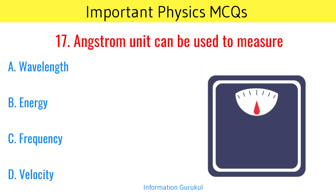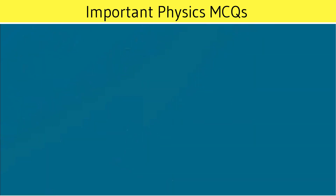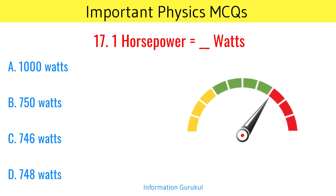Angstrom unit can be used to measure? Wavelength. 1 horsepower is equal to? 746 watts.